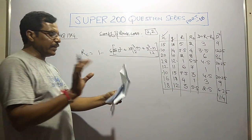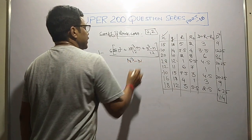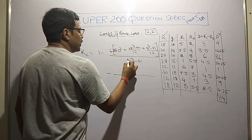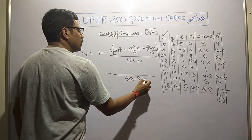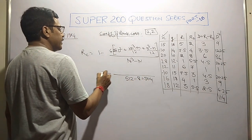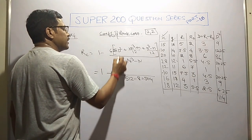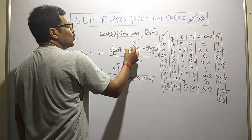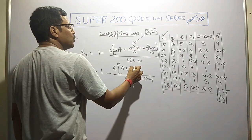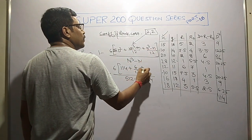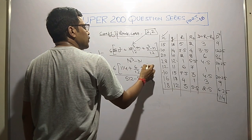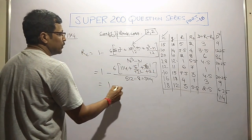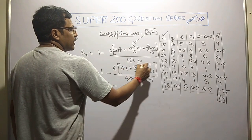Since values repeat, the formula includes correction terms: summation d square plus (n cube minus n over 12) for x variate repeated twice plus (n cube minus n over 12) for y variate repeated twice. All divided by (n cube minus n). n is 8, so 8 cube minus 8 equals 504.